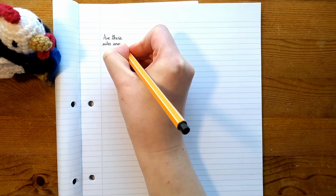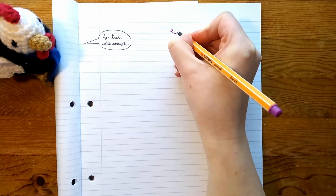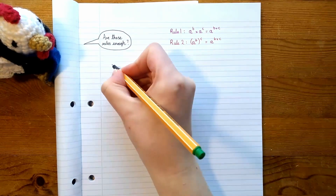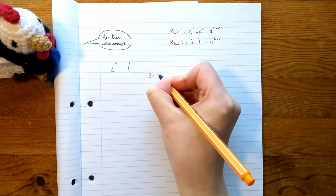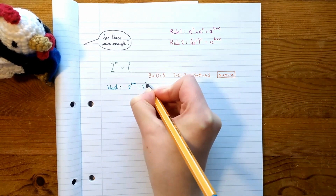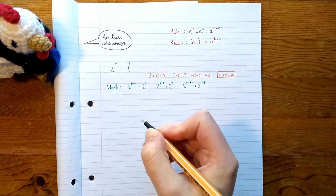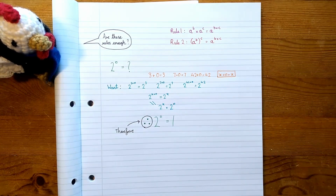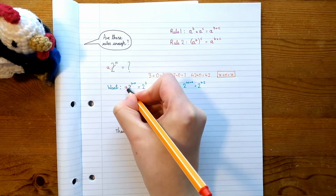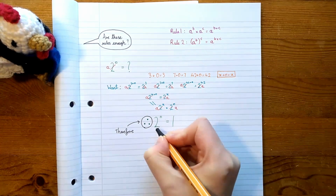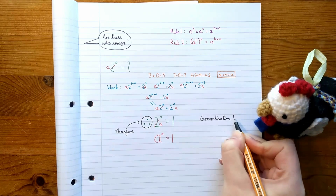These two rules might not seem like very much, but in maths we can often get surprisingly complex outcomes from simple sets of rules. Let's see what we can do with what we've got. What should 2 to the 0 be if it's going to follow our rules? The special thing about 0 is that anything plus 0 is itself, so multiplying by 2 to the 0 shouldn't change our answer. There's only one number where multiplying by it doesn't change anything, and that's 1. So the only sensible choice for 2 to the 0 is 1 — and since there was nothing special about choosing 2, we can see that a to the 0 should always be 1.